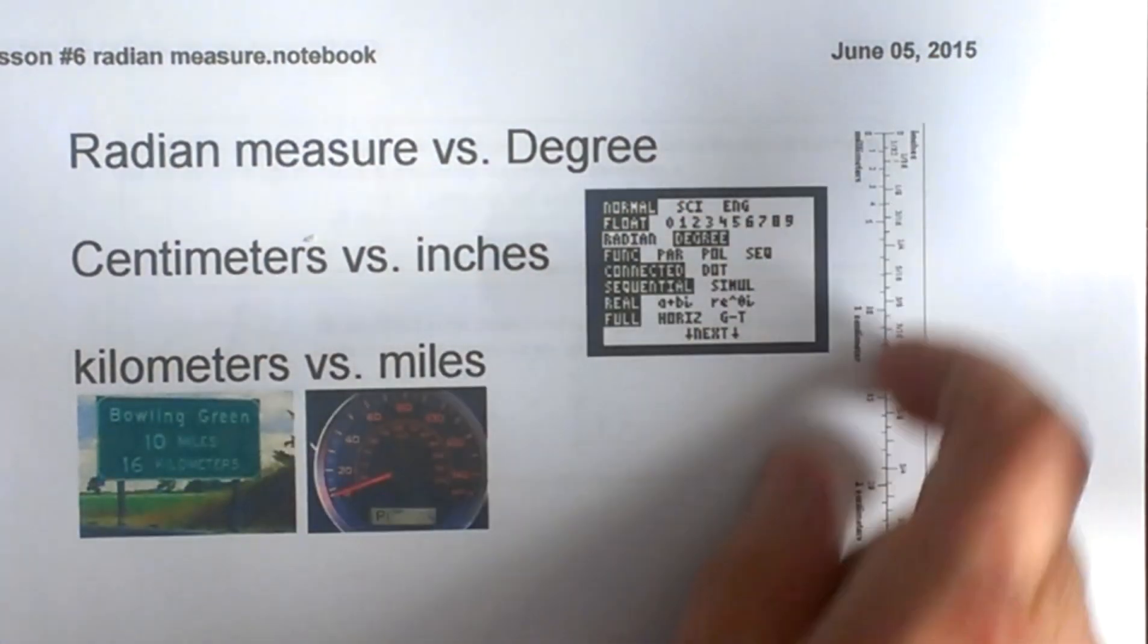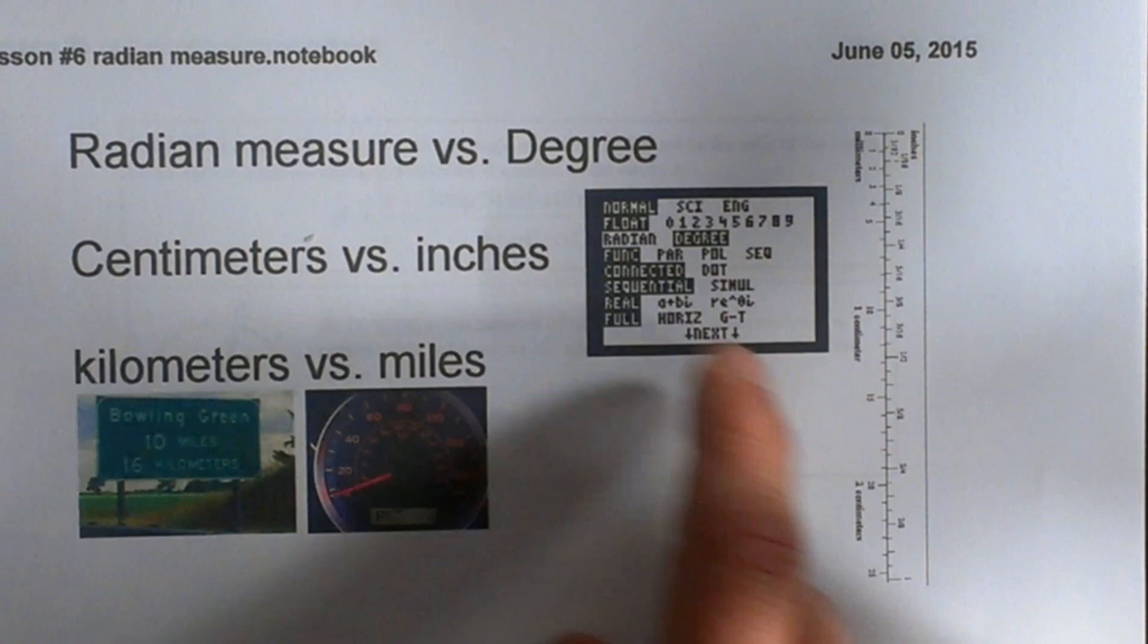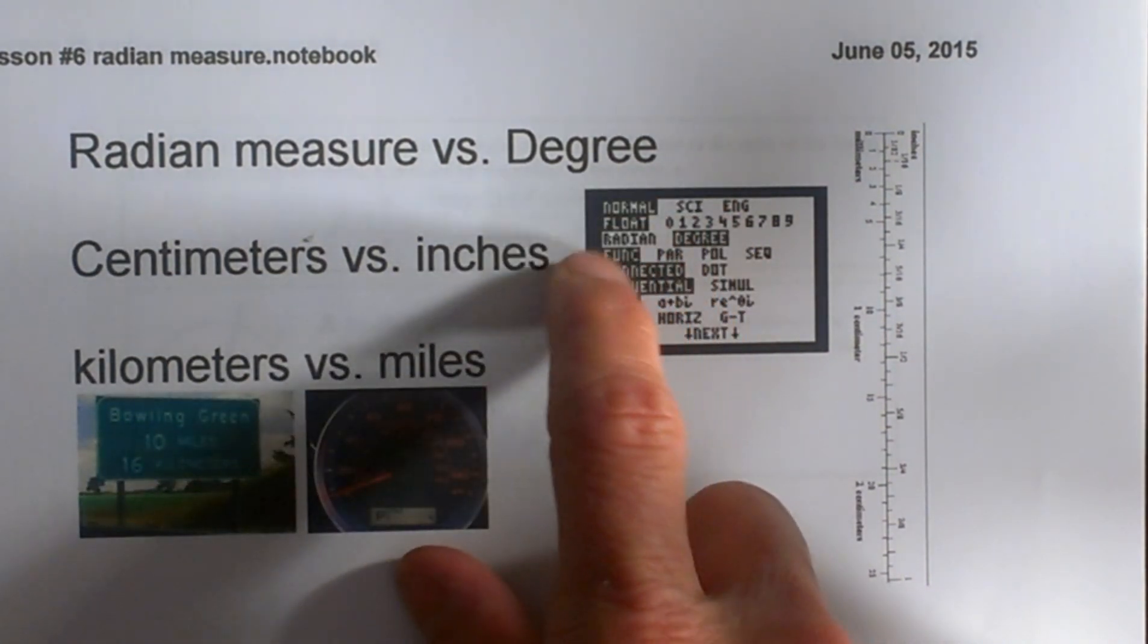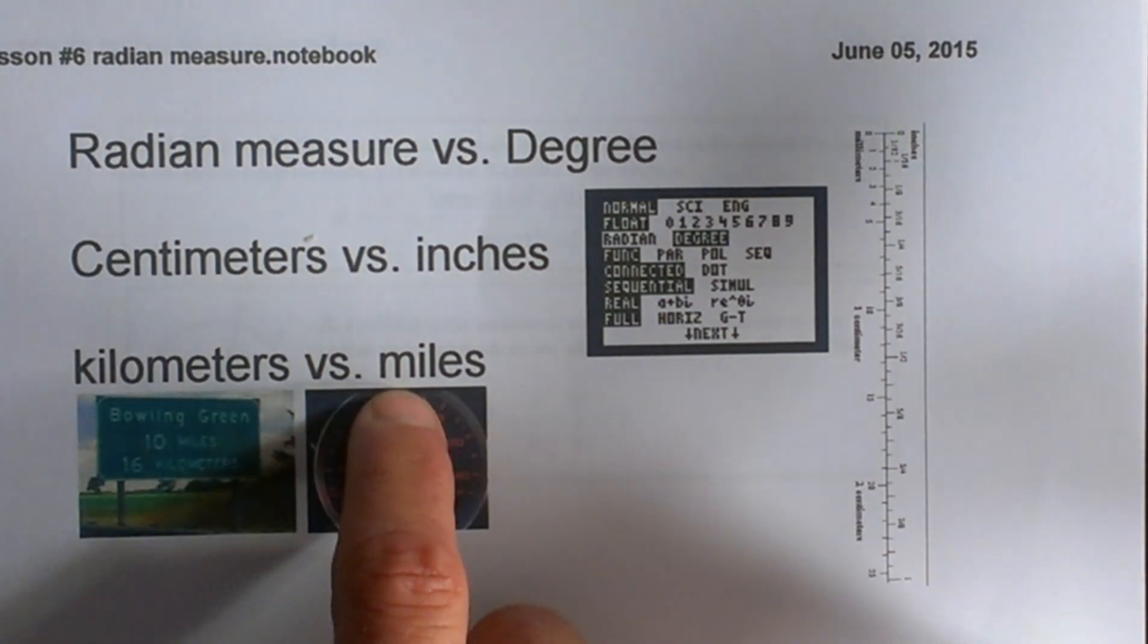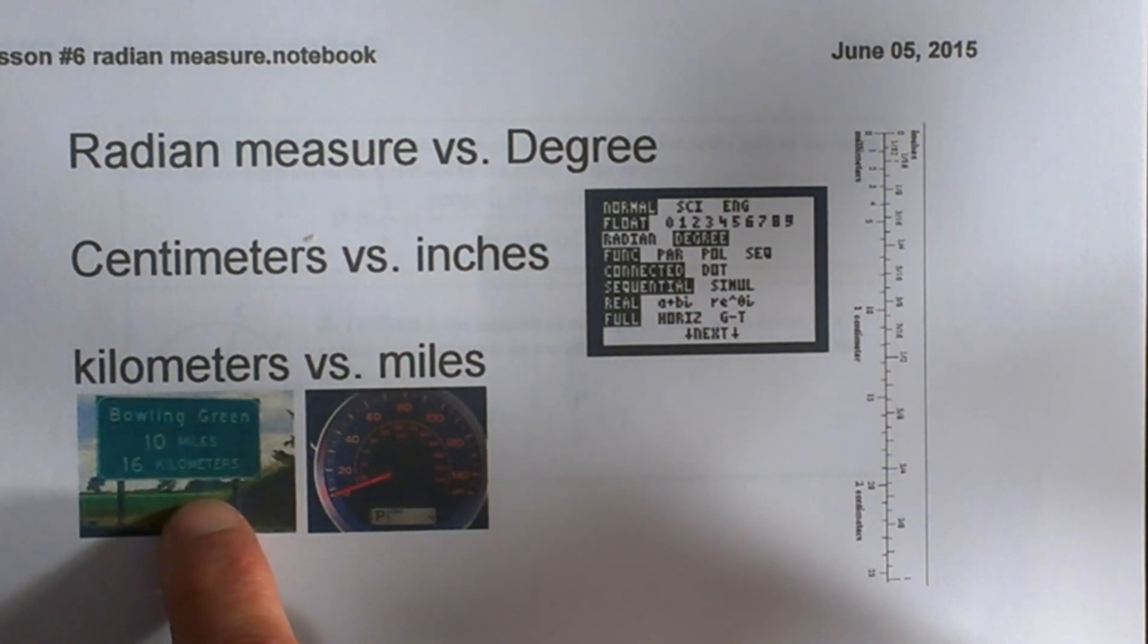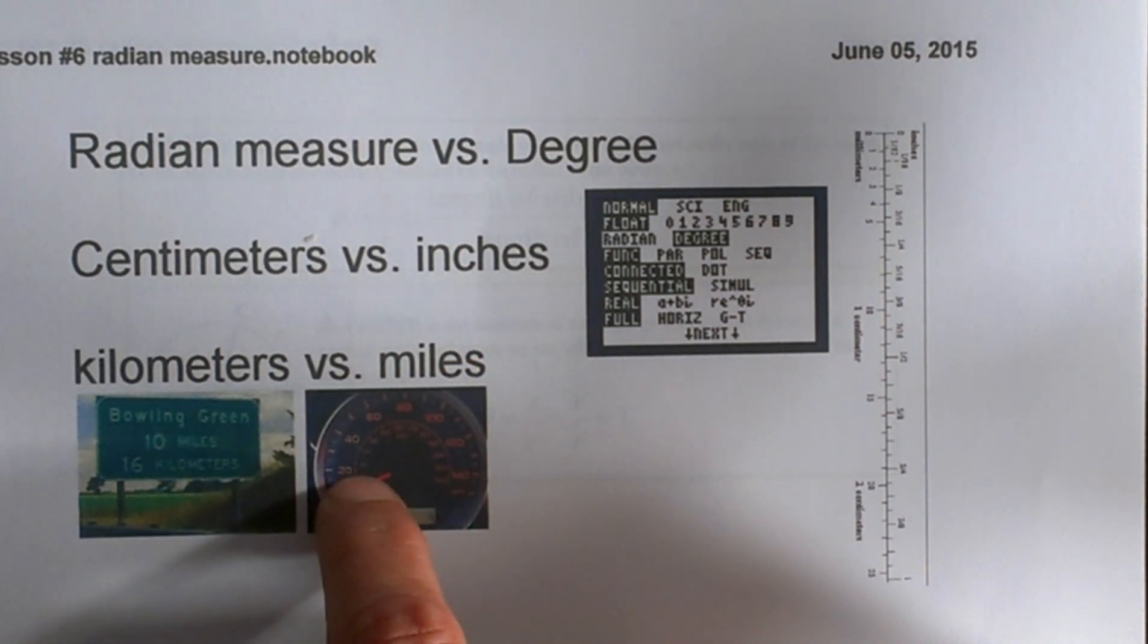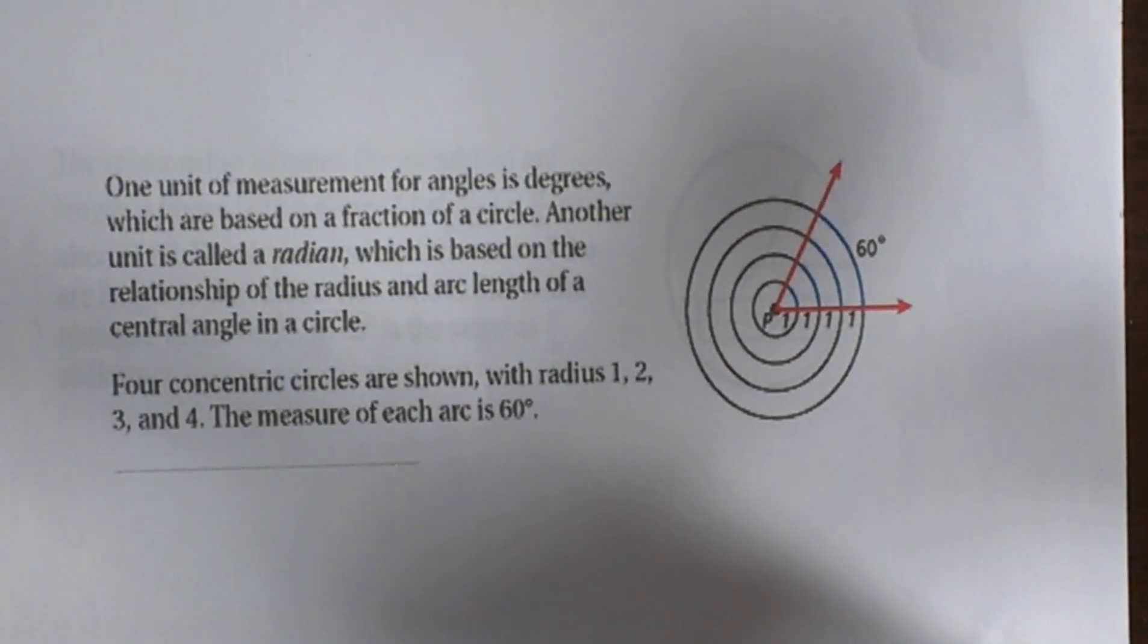You have rulers and on either side you have centimeters and inches. On a calculator you can switch between radians and degrees. When you're traveling you can see signs that give distances in miles or kilometers, and on your speedometer you can see miles per hour and kilometers per hour. It's just a different unit of measure.